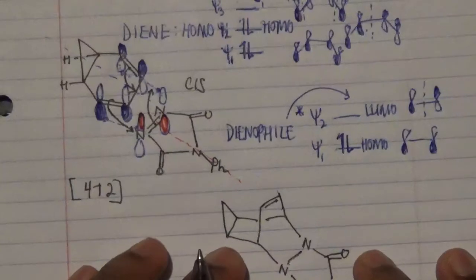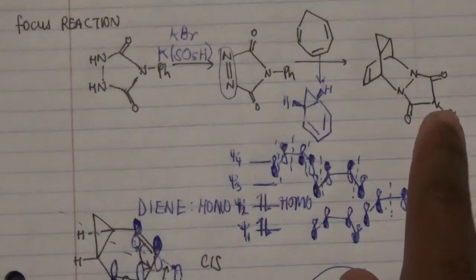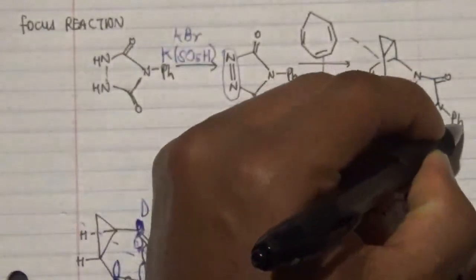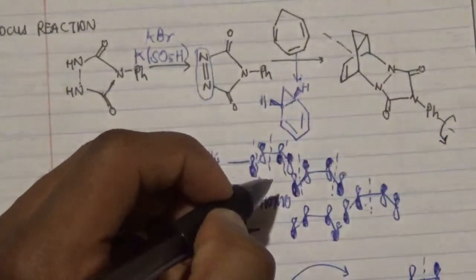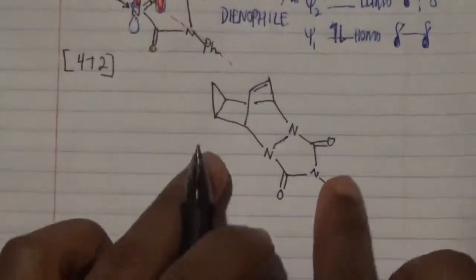Now this product is quite similar to what we have over here. The only difference is that we just have to rotate this 180 degrees, and then if I rotate this 180 degrees, I should get this particular structure over there.